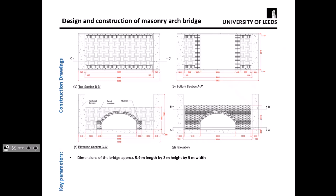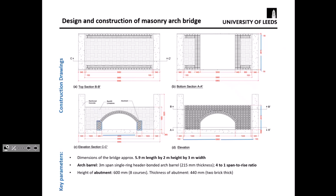This slide shows the construction drawings of the masonry arch bridge constructed and tested in the lab. The bridge is almost six metres long, two metres high, and the width is 2.9 metres. The arch span is 3 metres, and we used a single-ring header-bonded arch barrel — one brick, 215 millimetres — with a span-rise ratio of 4:1. With respect to the abutments, we used two-brick-thick abutments, eight courses in height. The backfill was a graded limestone, and the thickness from the crown to the top was 300 millimetres.